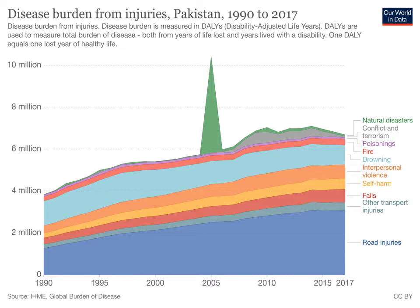Looking at the disease burden from injuries in Pakistan, a graph covering 1990 to 2017 shows natural disasters, conflict and terrorism, poisoning, fire, and road injuries plotted over time. The gray strip representing road traffic injuries gets wider from 1990 to 2017, while other injury types — represented by green, red, yellow, orange, and turquoise strips — remain smaller. This shows that among all injuries in Pakistan, road traffic injuries contribute most to the disease burden.